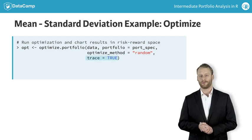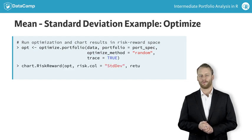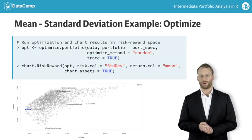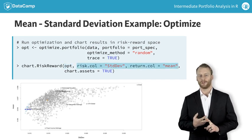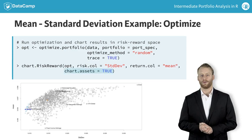Also note that you specify trace equals true, which stores the results of each iteration of the optimization. You can chart the optimal portfolio in terms of risk and reward with the chart.risk.reward function, passing in the optimization output, the objective names to use for risk and return, and true or false if you want to chart the assets.